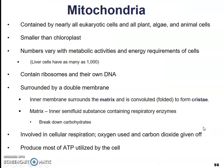Moving on to our next type of energy organelle: the mitochondria. Contained by nearly all eukaryotic cells — all plant, algae, and animal cells. They're slightly smaller than chloroplasts, and their numbers vary based upon the needs of the individual cell. They contain ribosomes and their own DNA. They are surrounded by a double membrane; the inner membrane surrounds what's called the matrix and is a folded membrane that forms a structure called the cristae. Inside is the matrix, a semi-fluid substance similar to cytoplasm that contains enzymes to carry out cellular respiration, breaking down carbohydrates to produce a usable energy source.